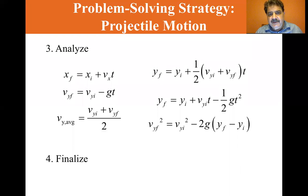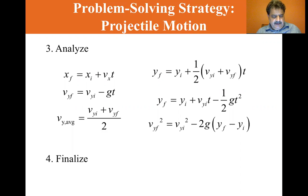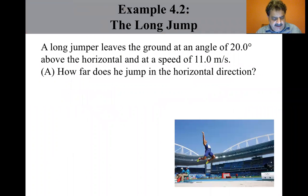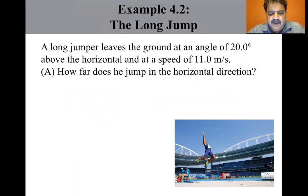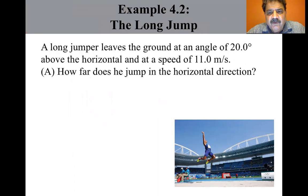In the last section we discussed problem-solving strategies, so we're going to go through the examples. A long jumper leaves the ground at an angle of 20 degrees above the horizontal and at a speed of 11 meters per second. How far does he jump in the horizontal direction?